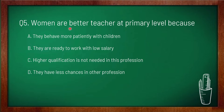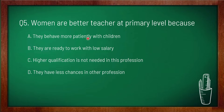Question 5: women are better teachers at primary level because — option A: they behave more patiently with children, option B: they are ready to work with low salary, option C: higher qualification is not needed in this profession, option D: they have less chances in other professions. The correct option is A — they behave more patiently with children. They have the ability to understand students' mental and emotional needs, and a better understanding of child psychology.